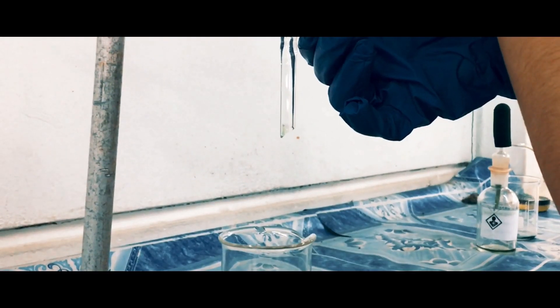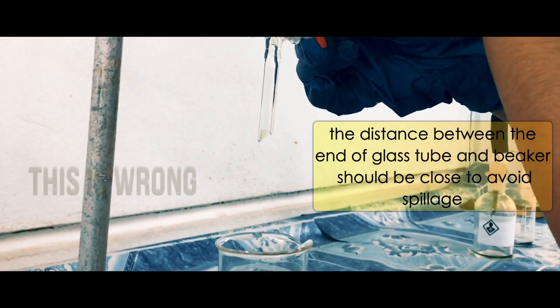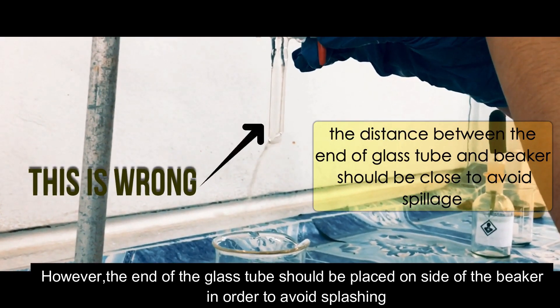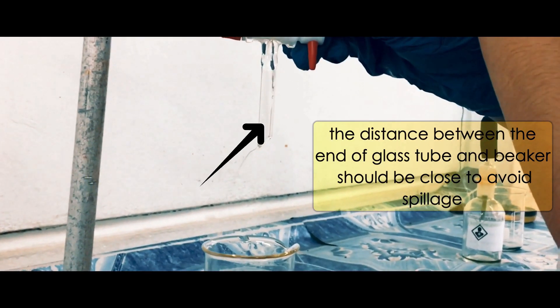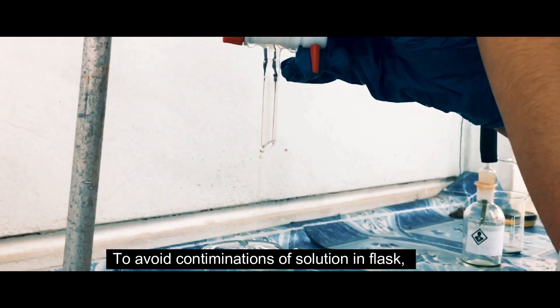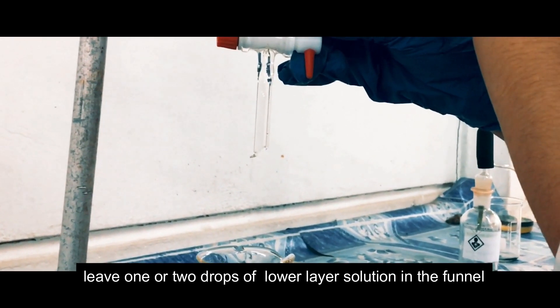Slowly open the stopcock to transfer the lower layer into beaker. However, the end of glass tube should be placed on side of beaker in order to avoid splashing. To avoid contamination of solution in funnel, leave one or two drops of lower layer in funnel.